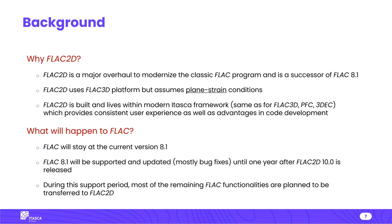So why are we switching from previous versions of FLAC to FLAC 2D? FLAC 2D is a major overhaul to modernize the classic FLAC program and is the successor to FLAC 8.1. It uses the FLAC 3D platform and assumes plane strain conditions, same as FLAC 8.1. FLAC 2D is built within the modern Itasca common framework — shared with FLAC 3D, PFC, and 3DEC — providing consistent user experience and advantages in code development, plus access to all modules available in those codes.